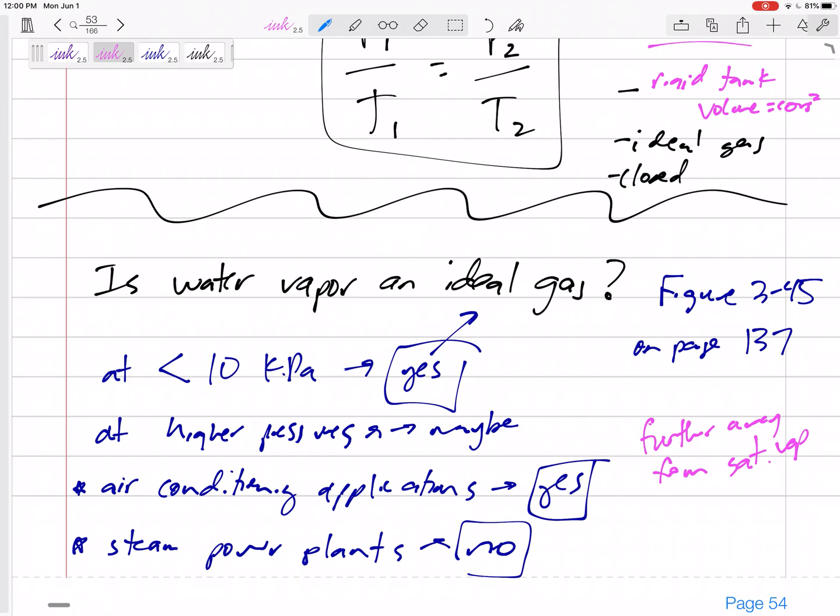And we'll do some calculations where we will look at some property tables and compare it, you know, look at table A-6 and get its value from table A-6. But what if we had used PV equals RT? What value would we get? And we can compare, see how accurate, and it'll be different for different situations, see how accurate we are. All right.